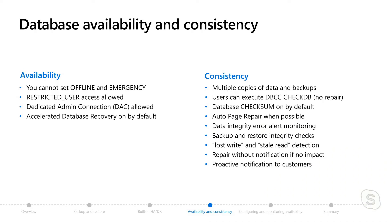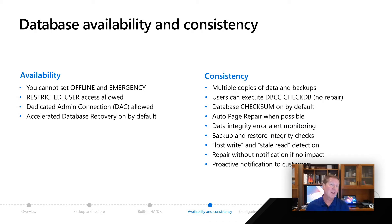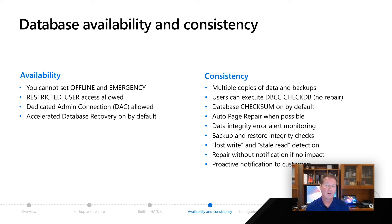If we find data integrity errors that we cannot immediately repair, we may work with you proactively. Integrity checks on backup and restore have been discussed, and we've also added by default lost write and stale read detection problems, which can show up in transient I/O error scenarios. We can take corrective action and even repair things without telling you — not to hide something, but if an easy repair can happen with no data loss, we can do that behind the scenes with no impact you'd even notice.